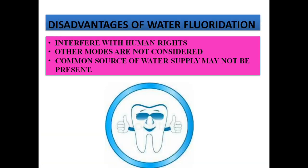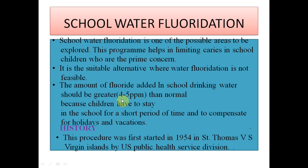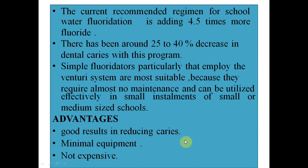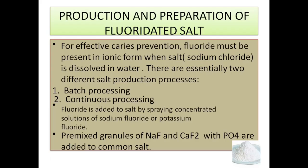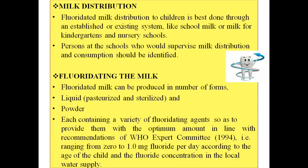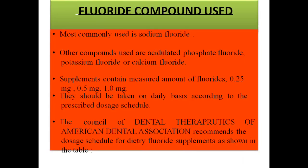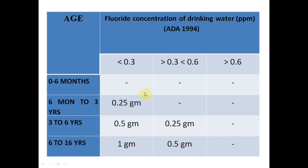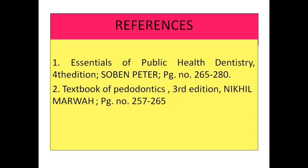School water fluoridation uses four to five times more ppm than community water fluoridation to compensate for shorter exposure. Salt fluoridation was started in 1948 and uses batch and continuous processing. Milk fluoridation uses liquid or powder application. Supplements include droplets, lozenges, and tablets taken daily. The American Dental Association table guides how much fluoride to supplement based on existing drinking water ppm, to get maximum protection against dental caries.